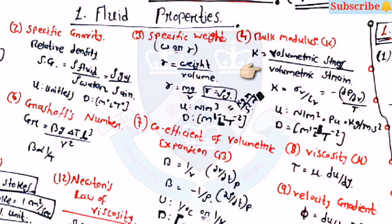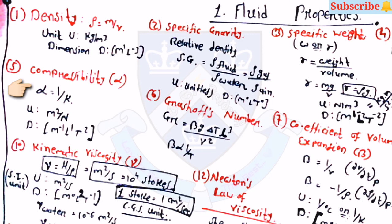Bulk modulus k is equal to volumetric stress divided by volumetric strain. Units are important here: for specific weight the unit is newton per meter cube, and for bulk modulus the unit is pascal, or you can say kg per meter into second squared. The fifth property is compressibility, which is equal to alpha. Alpha equals 1 by k, and its dimension is m-minus-1 l1 t2.